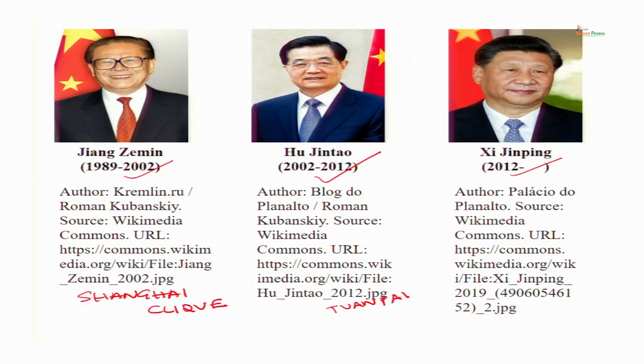Hu Jintao was succeeded by Xi Jinping. Xi Jinping was neither from the Shanghai clique nor the Youth League. He was a princeling — the princelings are the children of former communist leaders who played a very important role in the foundation of the Communist Party and the People's Republic. Because their fathers were part of the Communist Party, they received some advantage in politics, making this also a kind of faction.